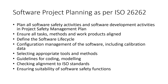Plan all software safety activities and software development activities in the software safety plan. Ensure all tasks, methods, and work products are aligned with each other. Define the software life cycle — whether you are going to implement a V-model, agile, or agile scrum model. If you are using agile methods, ensure proper tailoring according to Part 2 of functional safety. Other considerations include configuration management of software including calibration data, selecting appropriate tools and methods, guidelines for coding, modeling style guidelines, programming language selection, checking alignment to ISO 26262 standards, and ensuring suitability of software safety functions.